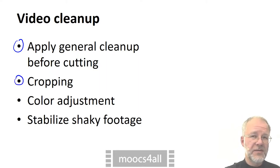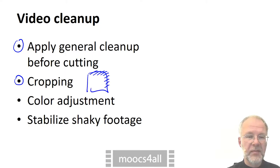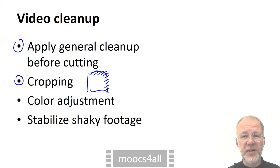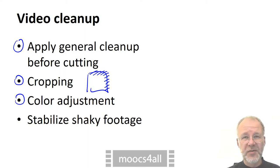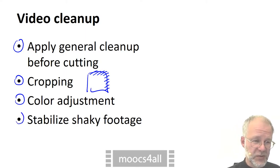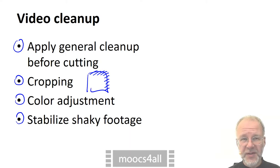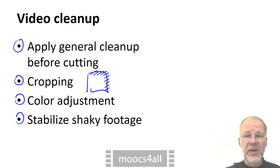By cropping off parts at the sides of the video frame, you get rid of distracting furniture in the background, or window frames on the screen. Of course, it's better not to record them in the first place. Faces almost always need color correction to look natural. And if you did shoot video without a tripod — which you should avoid — many video editing programs offer a function to reduce the shakiness of that video.